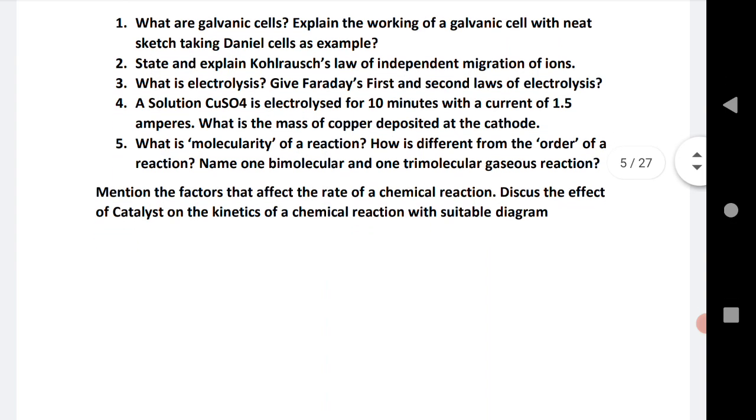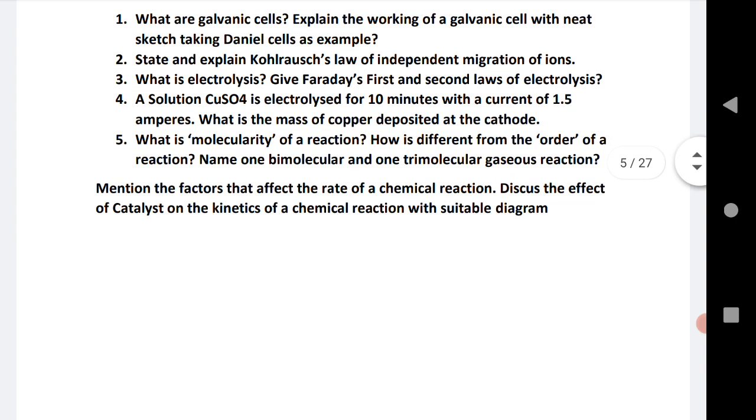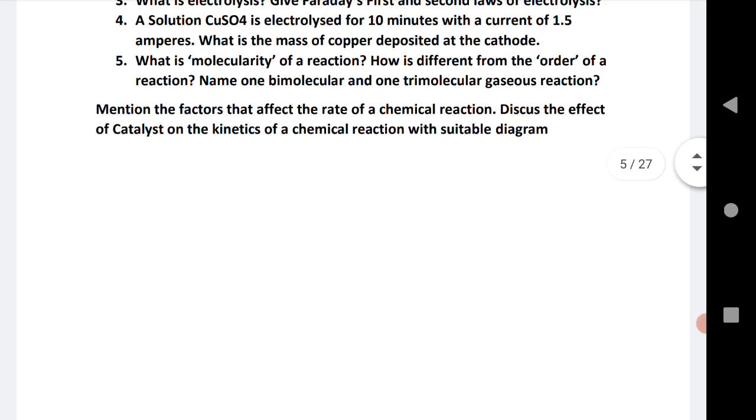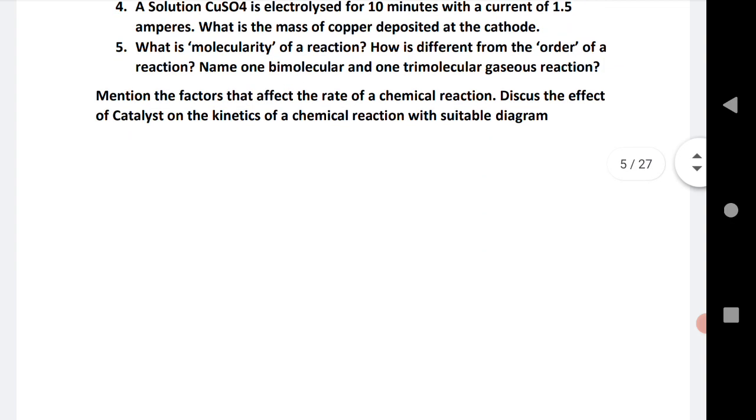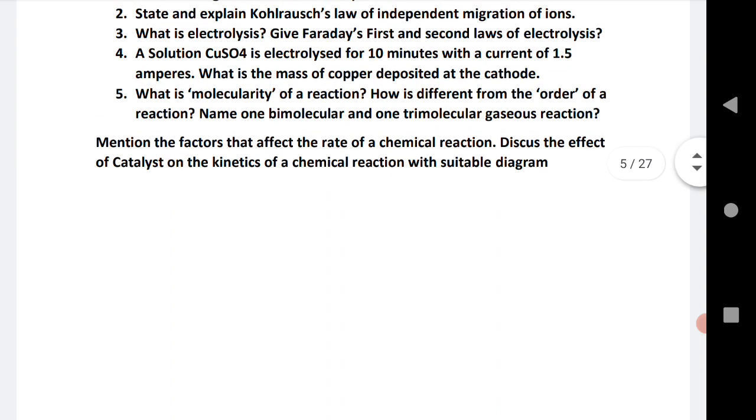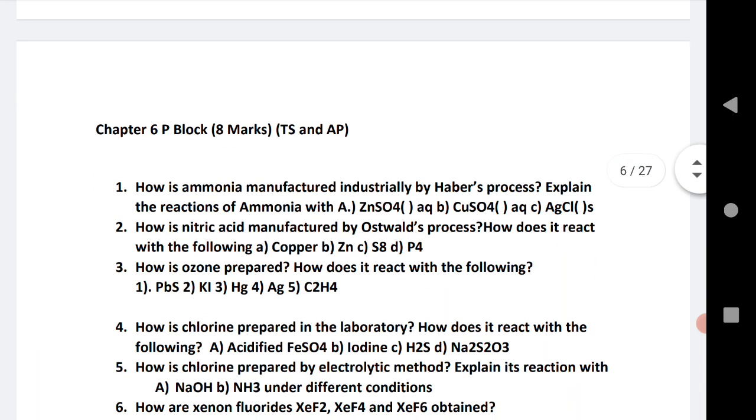Next question is Kohlrausch's law. Third is electrolysis. Fourth is a numerical problem - practice this numerical, definitely you will get good marks. Fifth is the molecularity of reaction. Sixth is mention the factors that affect the chemical reaction, discuss the effect of catalyst on the kinetics of a chemical reaction. I have not given this as six, but mark this as 6.1. Mention the factors. This sixth question is about chemical kinetics 8 marks, very important question.